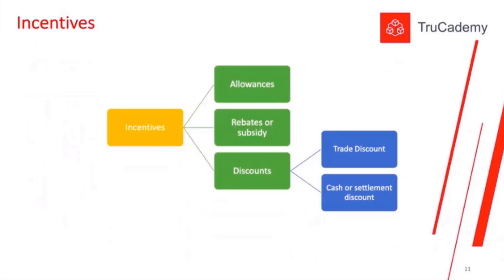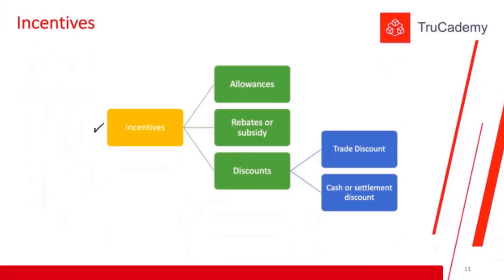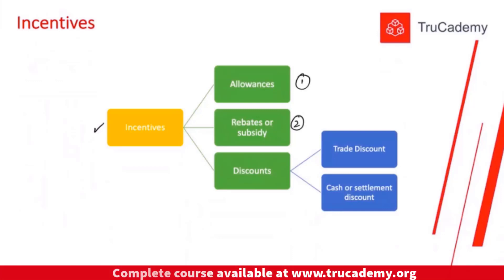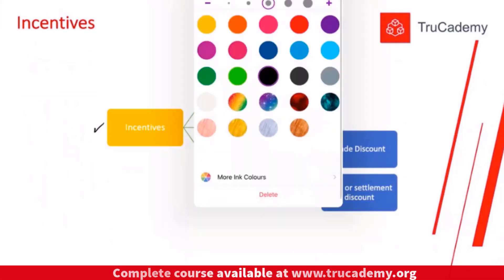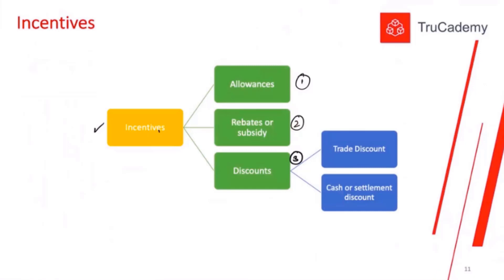There are different ways that suppliers can give incentives to their customers to maximize their sales. When we talk about incentives from suppliers, there are basically three types: allowances, rebates or subsidy, and discounts.